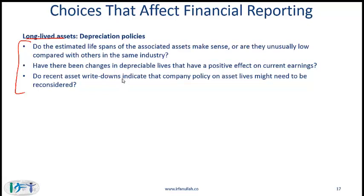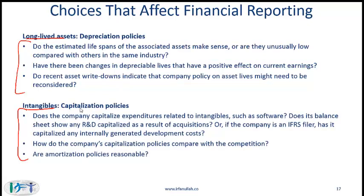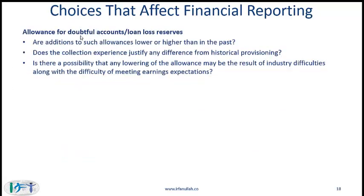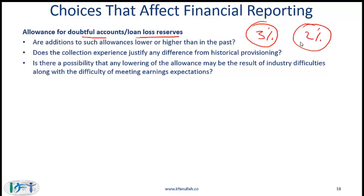Another item to emphasize is bill-and-hold transactions, where a company bills the customer and recognizes revenue but doesn't ship the product — a very aggressive form of revenue recognition. Regarding long-lived assets, depreciation policies, intangibles, and capitalization policies, these items are covered in other readings. For allowance for doubtful loans and loan reserves: companies might not make the appropriate allowance for doubtful accounts. For example, if based on past history the allowance for doubtful accounts should be 3%, but to boost numbers the allowance used is only 2%, that would be a cause for concern, and analysts need to understand whether such a change is justified.